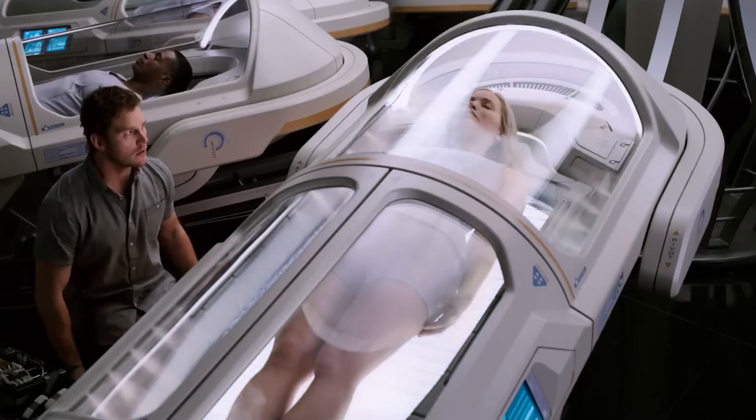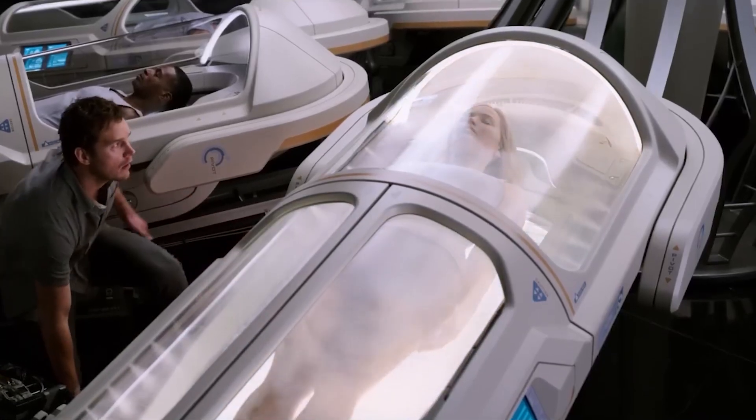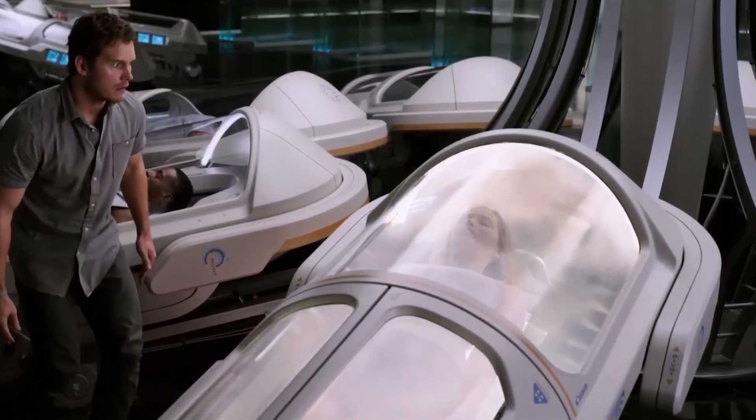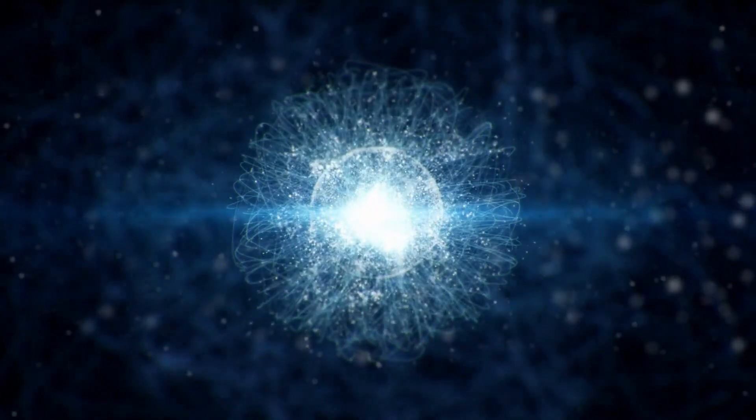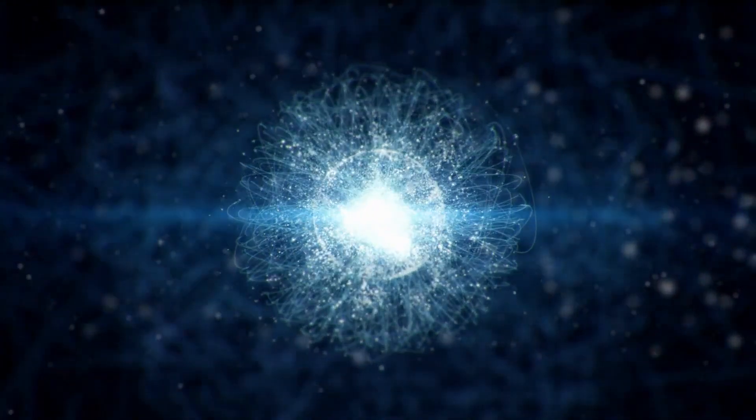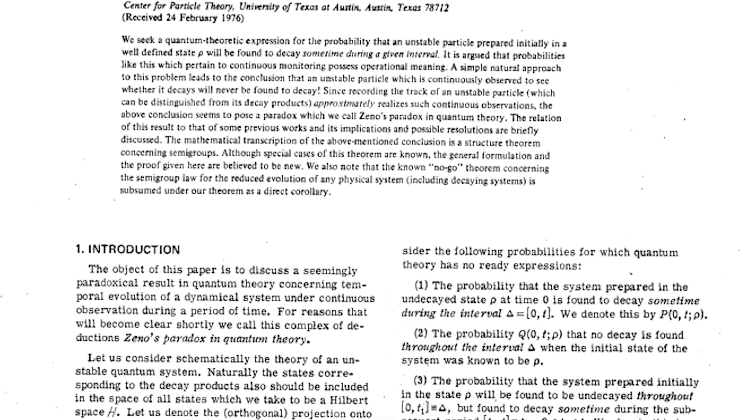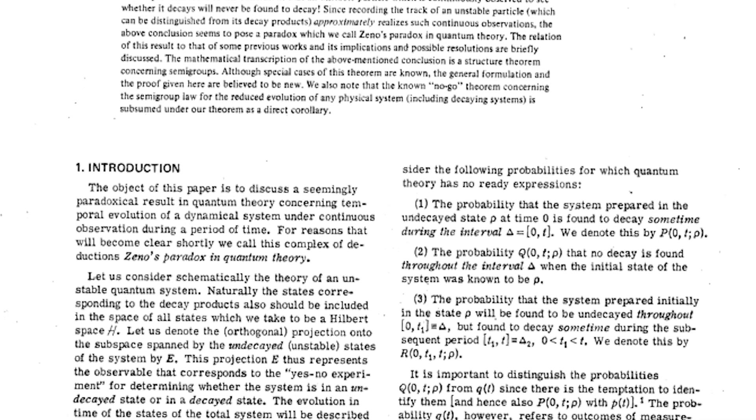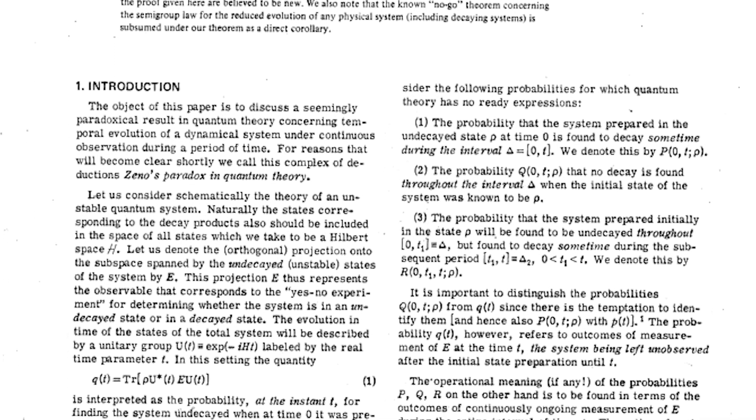We already possess something akin to the technology of stasis fields so popular among science fiction writers, so far only on a limited scale, but even that is already very cool. At the core of this technology lies the so-called quantum Zeno effect, first predicted in the year 1977 by physicists Bidyanoth Misra and George Sudarshan.